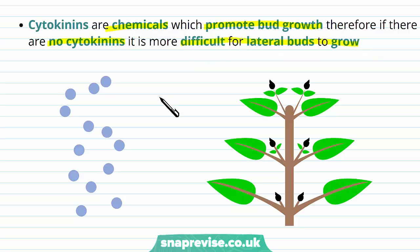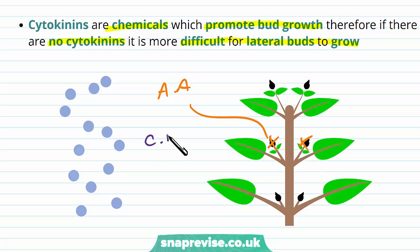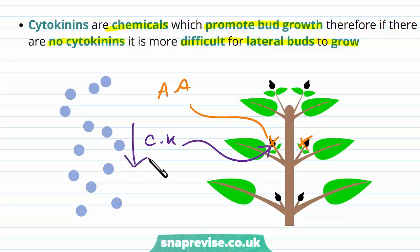So abscisic acid blocks the growth of lateral buds, while cytokinins encourage them. However, when cytokinin levels are low, this encouragement will also be low.